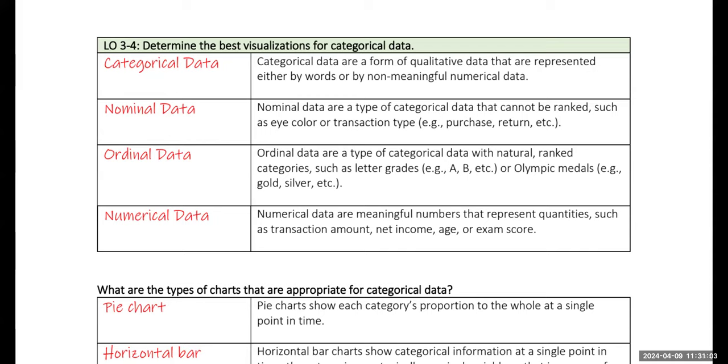The second kind is ordinal data. In this kind of categorical data, the order actually does matter. If you wanted to categorize students by grades, you could have all the students who got an A versus all the students who got a B and all the students who got a C. And the order does matter because the A's have better grades and got higher scores than the students with B. Same with the Olympics. Gold is the best, then silver, then bronze.